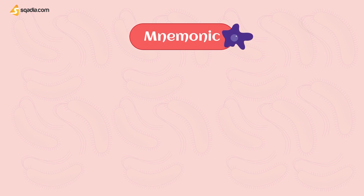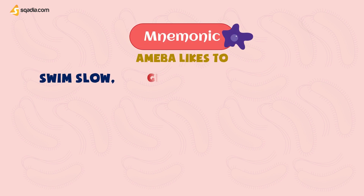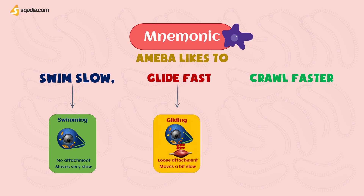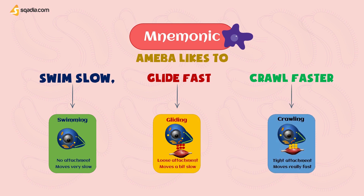To remember this, keep a mnemonic in mind: the amoeba likes to swim slow, glide fast, and crawl faster. Amoeba means amoeboid motions. Swim slow means swimming motion is slow. Glide fast means gliding motion is fast. And crawl means crawling motion is faster.